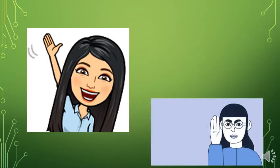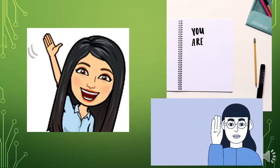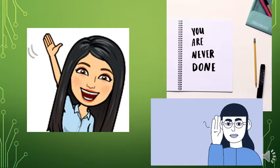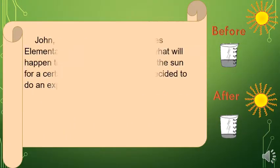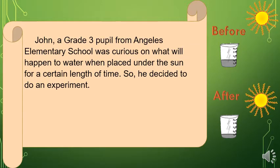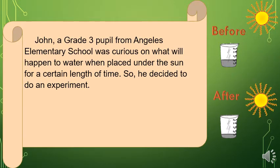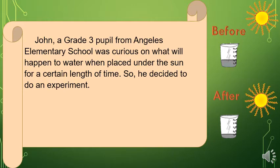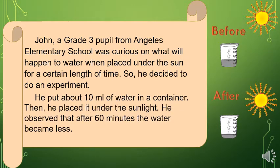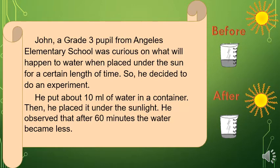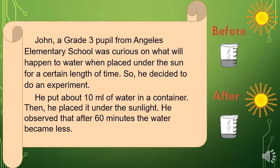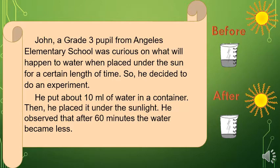First, I want you to listen to a story. Take note of some important details. John, a Grade 3 pupil from Angeles Elementary School, was curious about what will happen to water when placed under the sun for a certain length of time. So he decided to do an experiment. He put about 10 ml of water in a container, then placed it under the sunlight. He observed that after 60 minutes, the water became less.